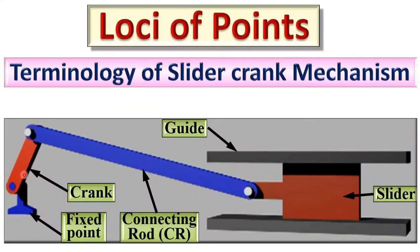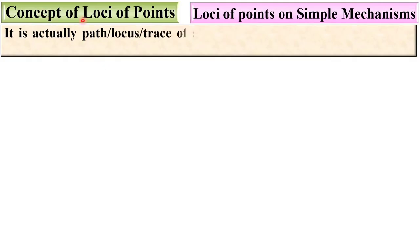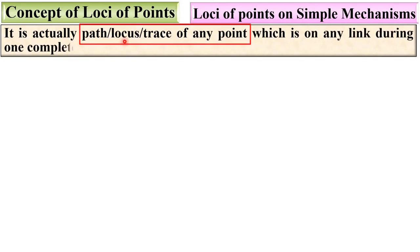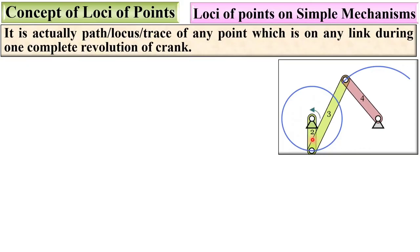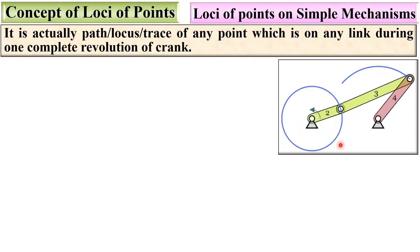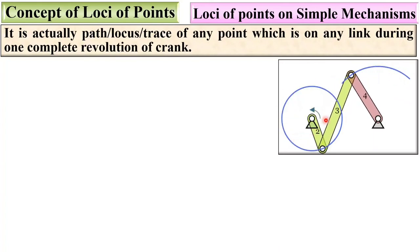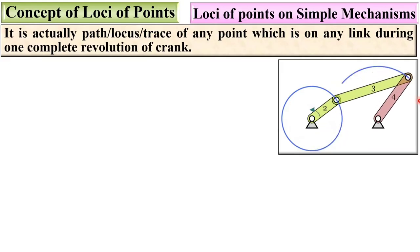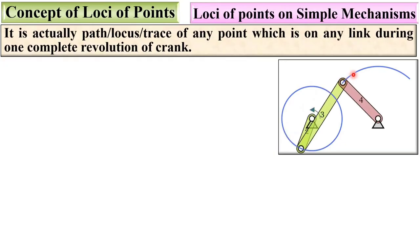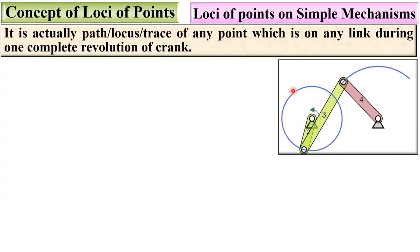Through this crank we provide the input to the mechanism. The locus of points is the path, or trace, of any point on any link during one complete revolution of the crank. During one complete revolution of the crank, the path traced by any point on any link is considered the locus of that point. Here you can see this is actually the locus of the end of this link — a really simple concept.